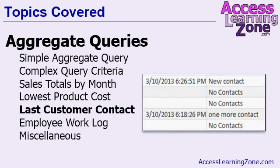Next is the last customer contact report — show me a list of all my customers, the date of the last contact with them, and what that contact was. If there are no contacts, show that. This is great for seeing which customers you haven't talked to in a while, and also for a brief synopsis of where each customer's at.